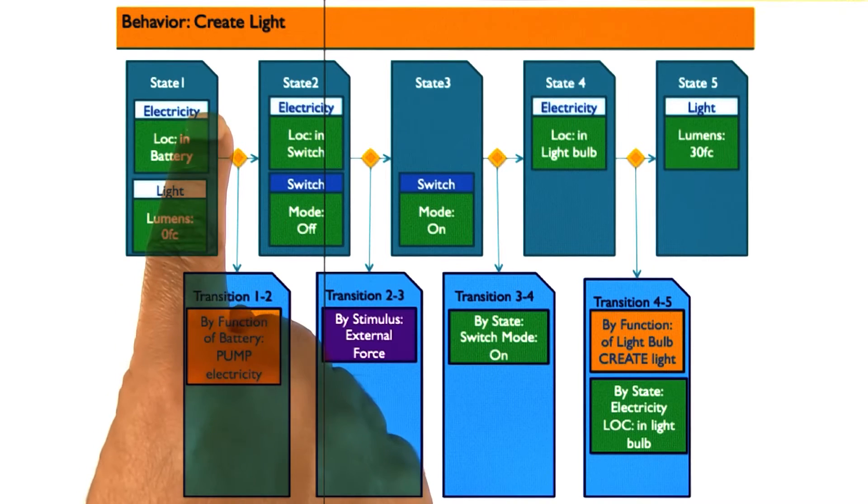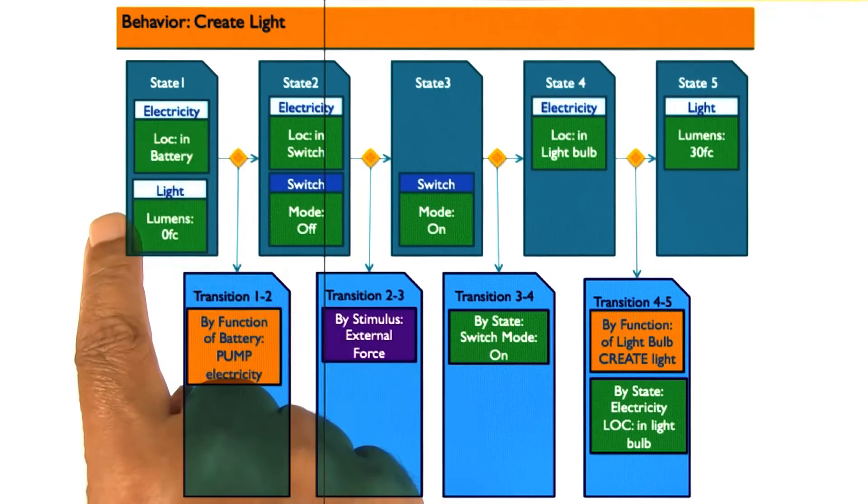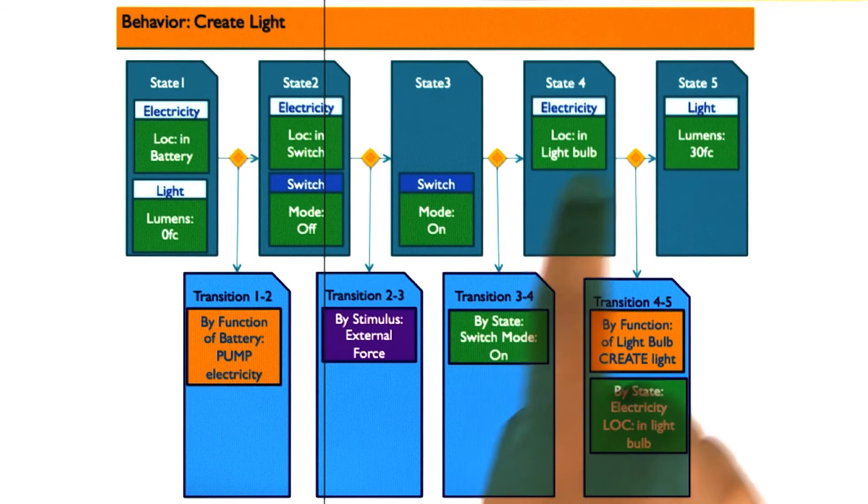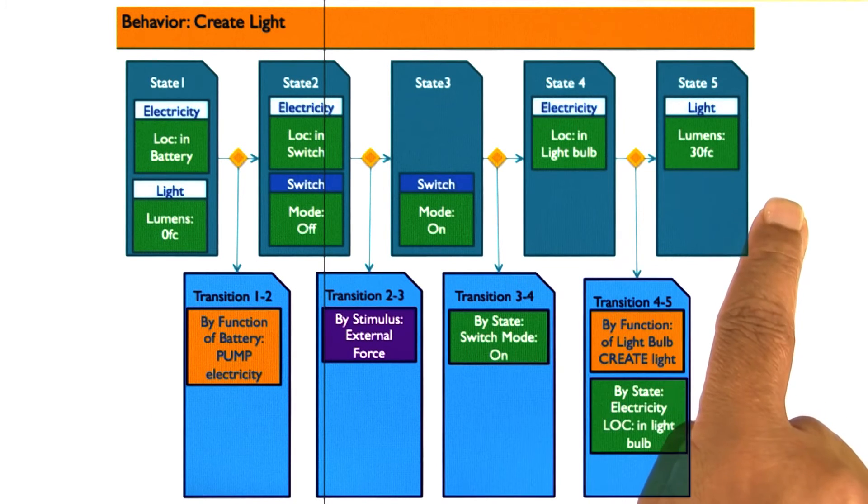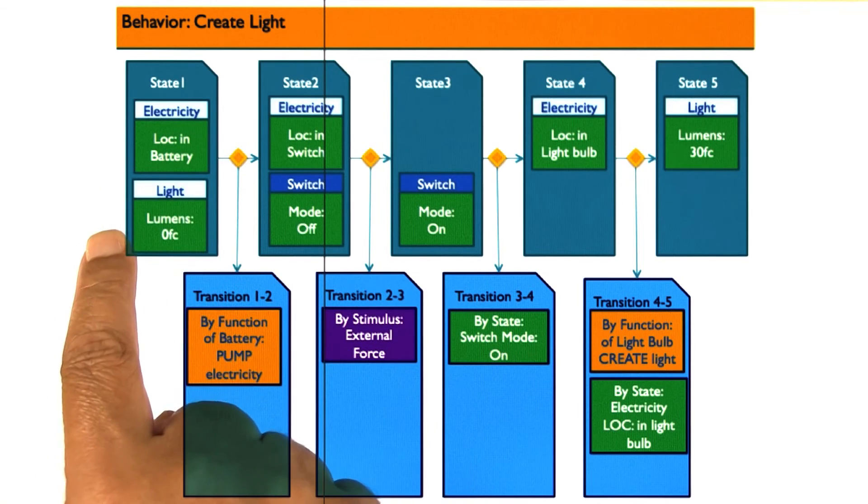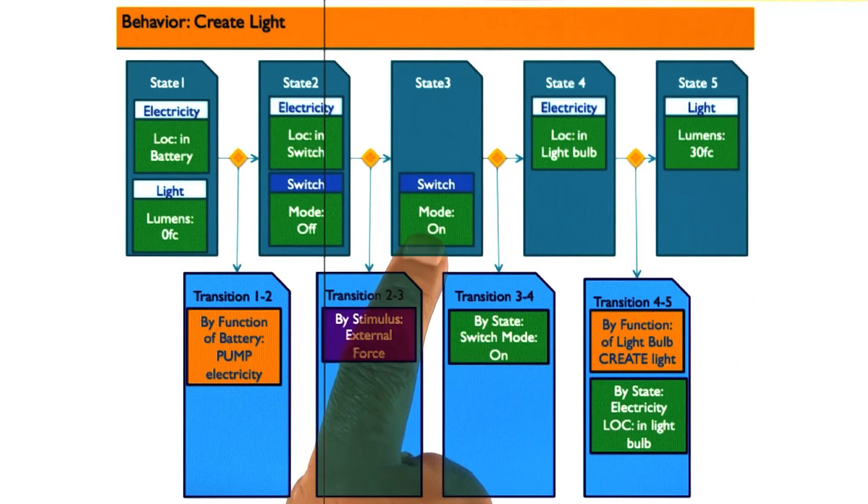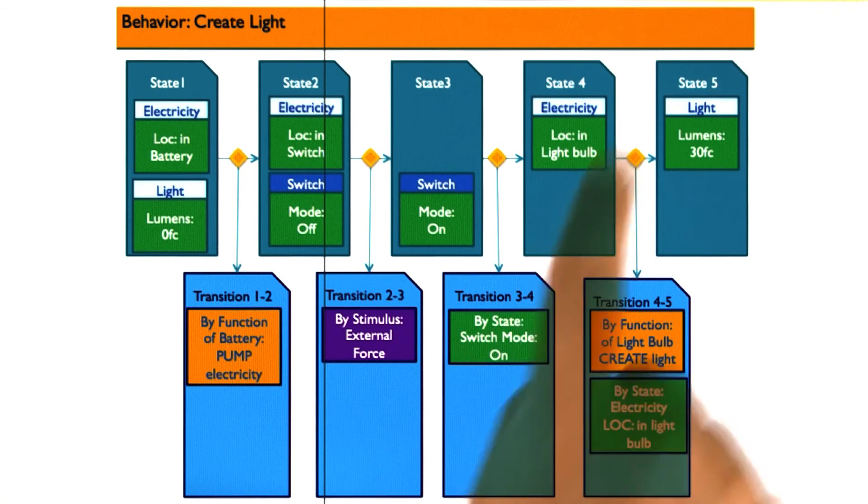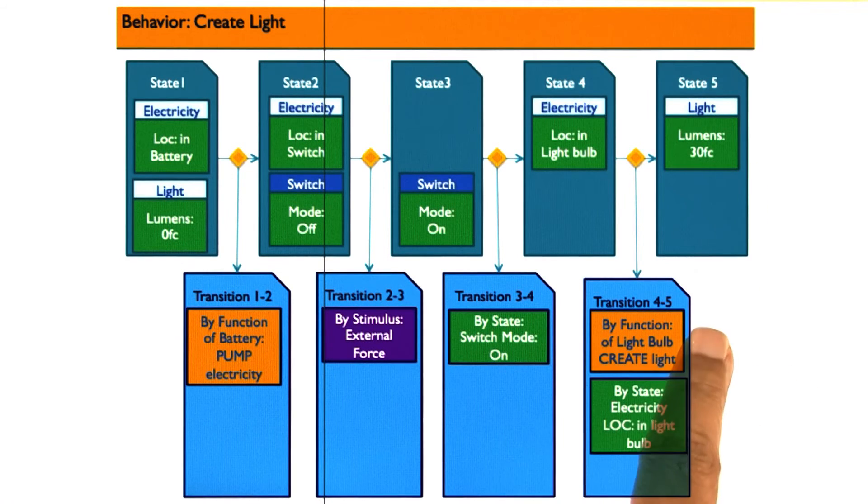So here is electricity, initially in the battery. Then this electricity flows from the battery to the bulb. And then the bulb converts this electricity into light. But in order for this electricity to flow through the bulb, this particular switch has to be in the mode on. The switch goes into the mode on when someone presses on it. Electricity is converted into light because that's the function of the bulb.